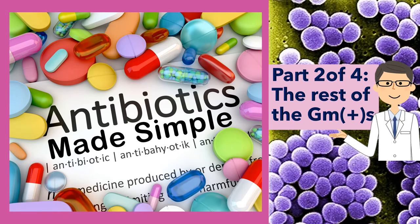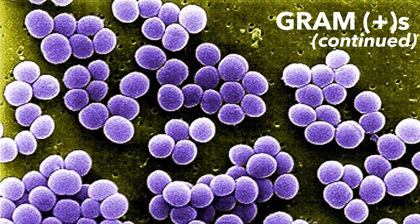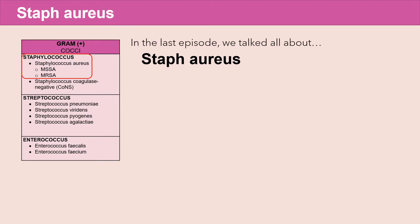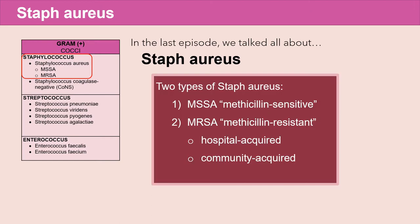This is part two of the Antibiotics Made Simple lecture series, and in this section we're going to complete the discussion of the rest of the gram-positive organisms. In the last episode we talked all about staph aureus — that there are two types: MSSA and MRSA. We discussed the treatment of hospital-acquired MRSA infections, and in this part we're going to talk about the treatment of community-acquired MRSA.